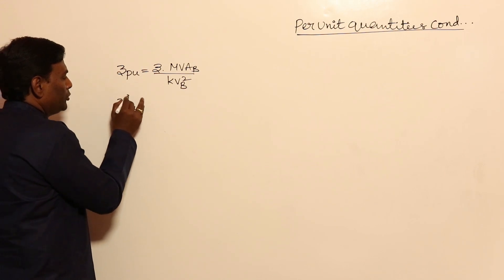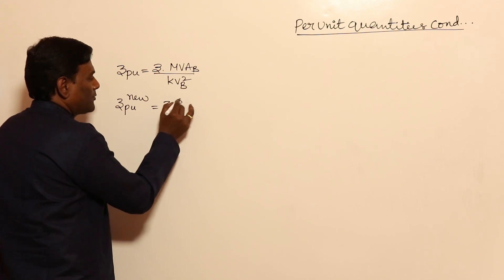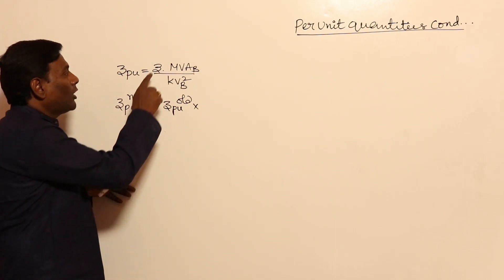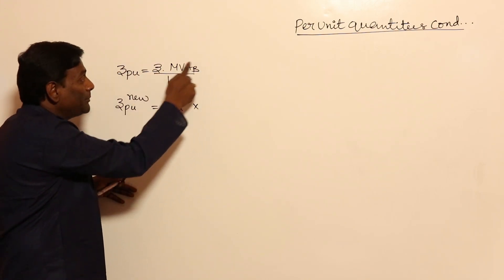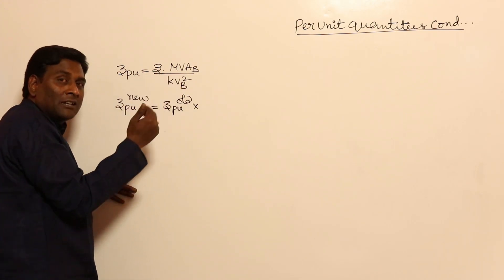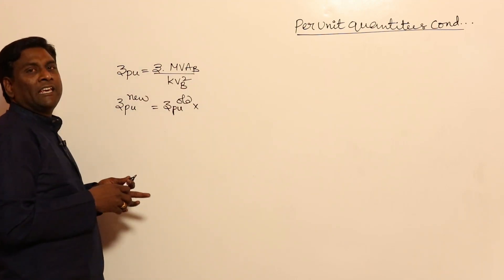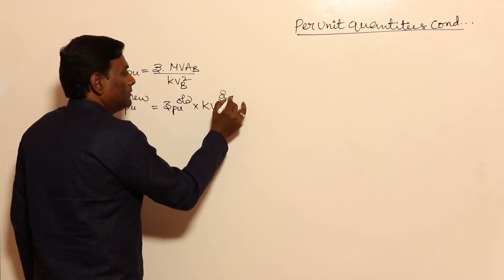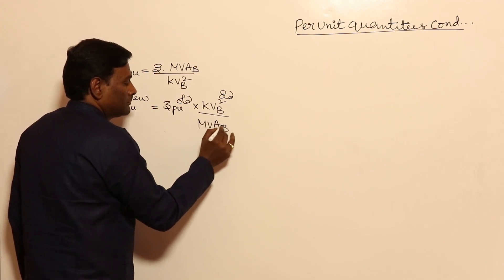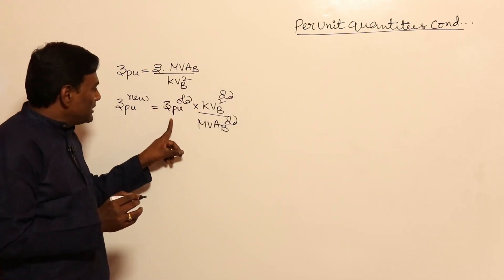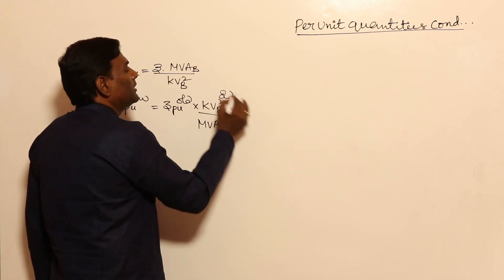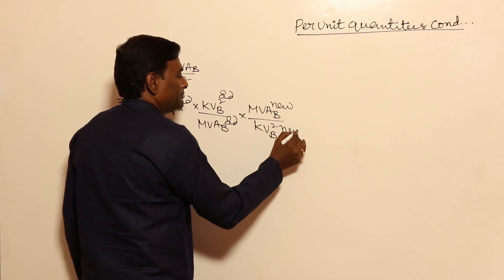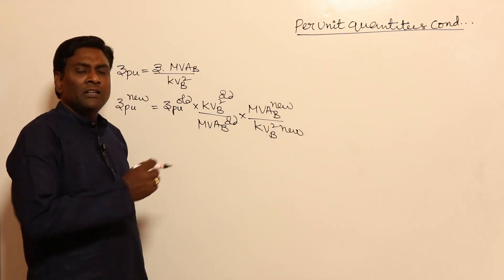When changing MVA base, Z in ohms remains the same — only Z per unit changes. Z per unit old equals Z into KV base old squared divided by MVA base old, which gives Z in ohms. Then convert to new bases: Z per unit new equals Z into MVA base new divided by KV base new squared. So Z per unit new equals Z per unit old into (KV base old squared / MVA base old) into (MVA base new / KV base new squared). Based on this, we will solve problems immediately after.